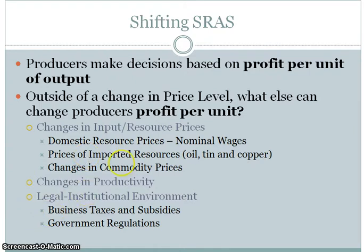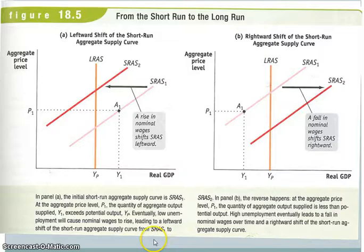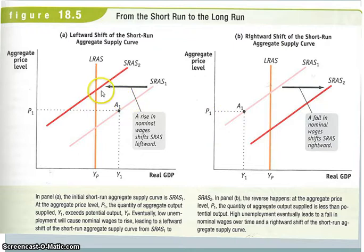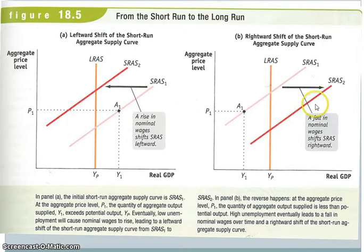When we talk about an increase in the short-run aggregate supply, we're talking about a rightward shift. When we're talking about a decrease in aggregate supply, we're talking about a leftward shift. Recognize that when aggregate supply decreases, the price level goes up, and when aggregate supply increases, the price level will go down.